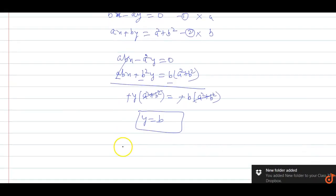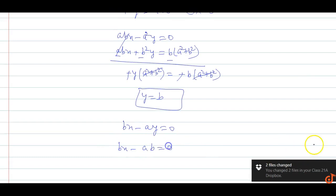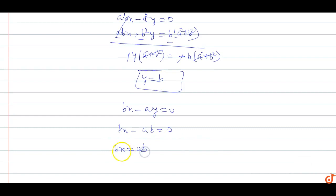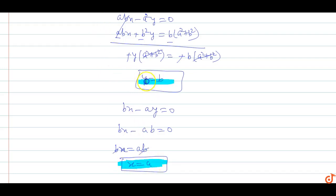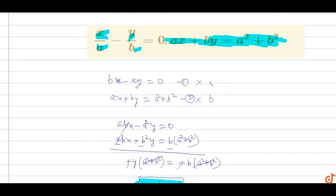Now substituting y equals b into equation 1: bx minus a·b equals 0, so bx equals ab, and b cancels to give x equals a. Therefore, the final answer is x equals a and y equals b.